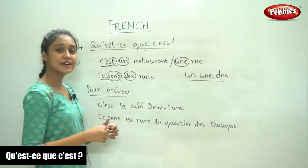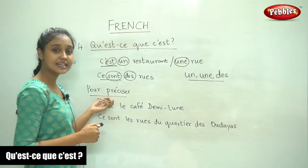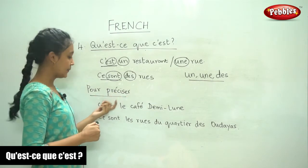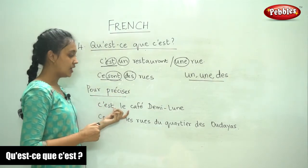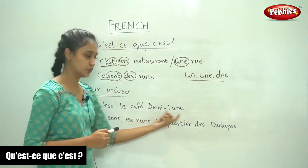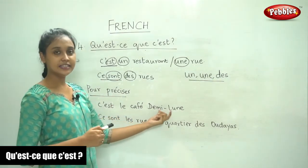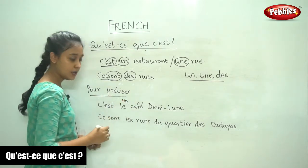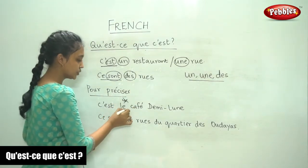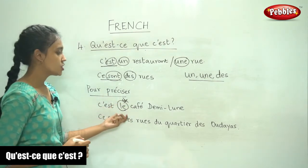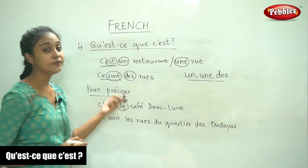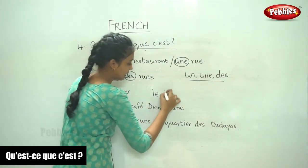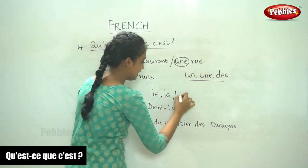Moving on to the definite article. Now if we want to say something precise and particular — 'C'est le café Demi-Lune' — it is the café Demi-Lune. In this case we wouldn't say 'un,' we would use 'le.' So here we make use of the definite articles: le, la, and les.